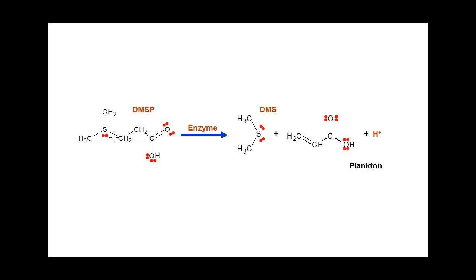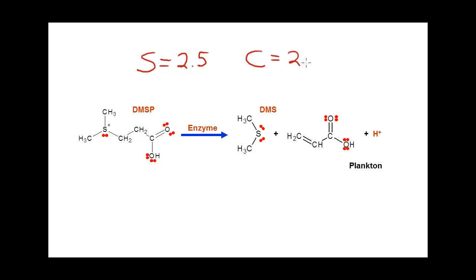I'm going to start on the sulfur in DMSP. In the bond cutting method, we treat the molecular substance like it is ionic and we need to know the electronegativities of the atoms involved. Sulfur's electronegativity is 2.5, which happens to be the same as carbon. We typically assign bonded electrons to the more electronegative atom, but since sulfur and carbon have the same electronegativity, we divide the bonded electrons equally to calculate the oxidation number.